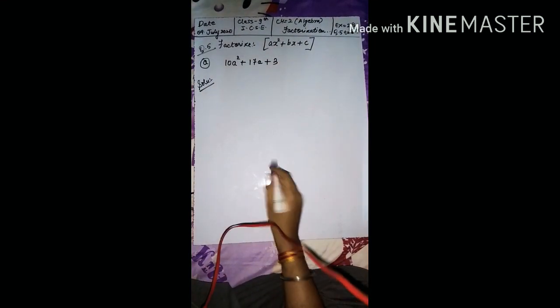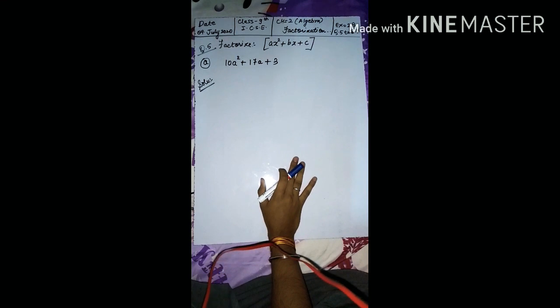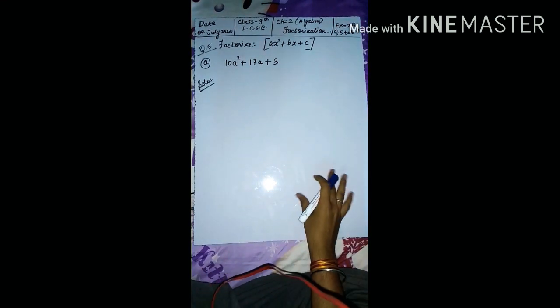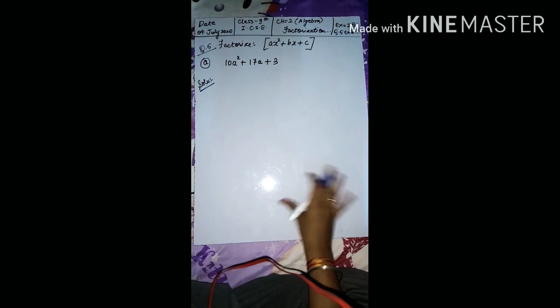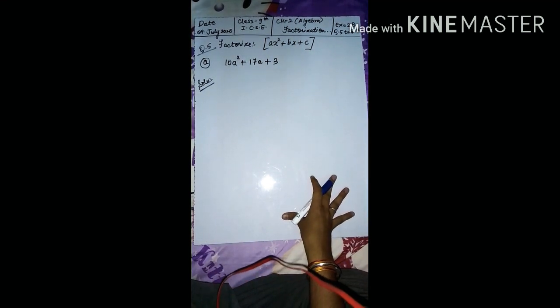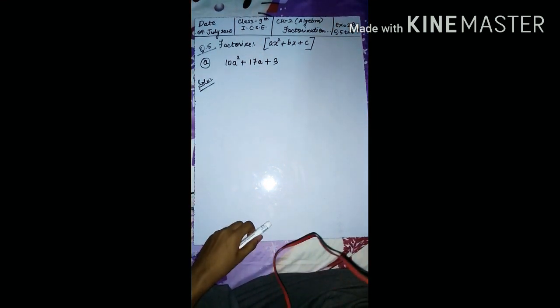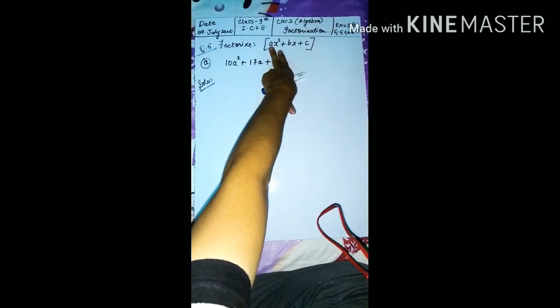Good morning students. In the last class we completed exercise 2b up to the 4th question. Now only 3 questions are remaining, and in this video we will complete the exercise by doing those 3 questions. I am starting with the 5th question, which is also factorization — an expression of the form ax² + bx + c.